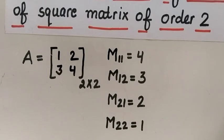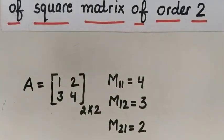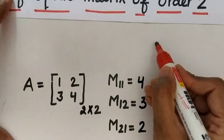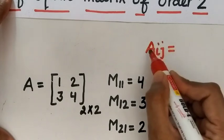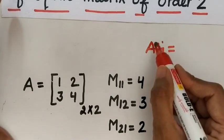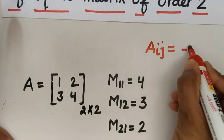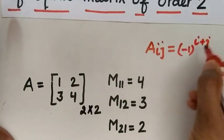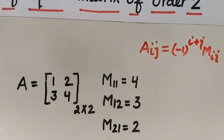Now we come to cofactors. Before finding cofactors, there is a relationship between minors and cofactors. We use capital A for cofactors and capital M for minors. The relationship is: A_ij equals (−1)^(i+j) times M_ij.